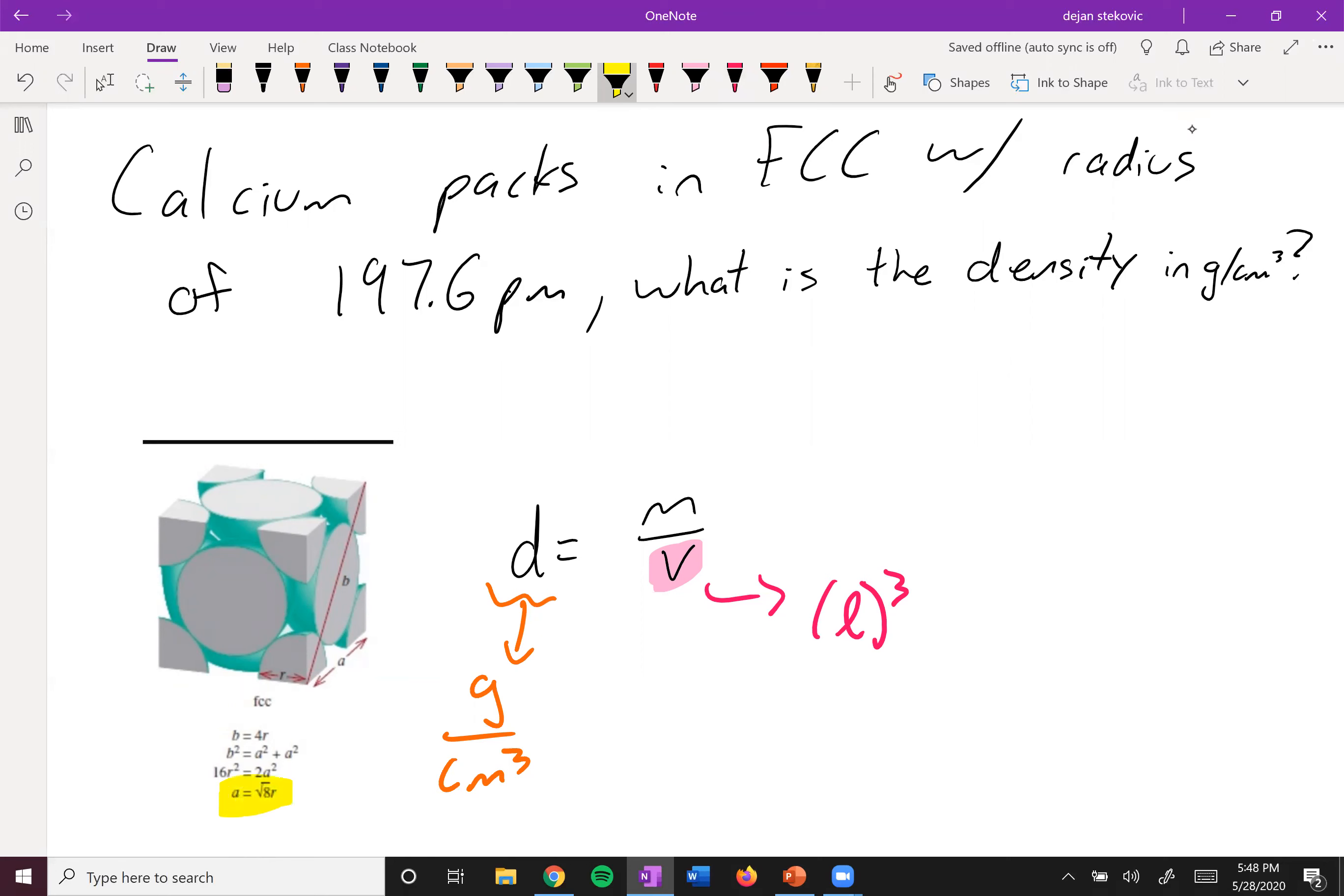And then from this equation right here, we can say that one of the edge lengths is equal to the square root of eight times r. So this is equal to r times the square root of eight cubed. And so we can then take this 197.6 picometers and plug this into here.